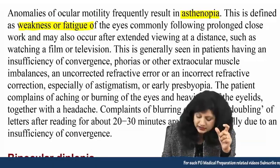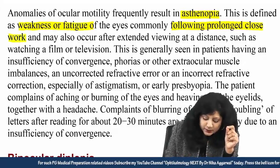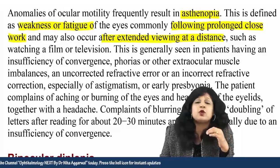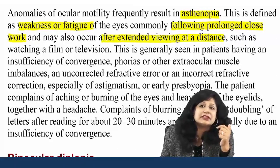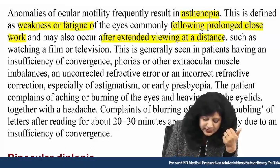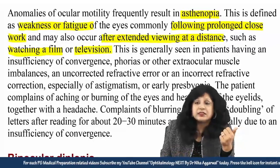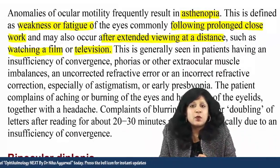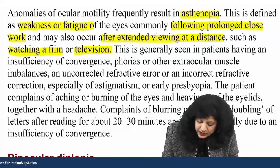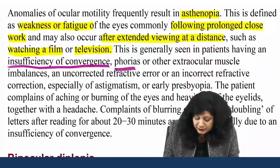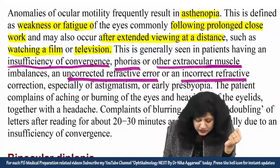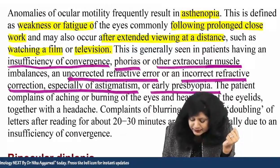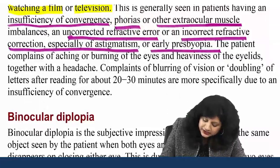This weakness or fatigue due to prolonged close work is the often-cited cause associated with asthenopia. But you will be amazed to see that even when doing prolonged distance work — say watching a film or television — the person also has asthenopia. This occurs due to insufficiency of convergence, phorias (latent squint), or other extraocular muscle imbalances. We can also have uncorrected refractive errors, incorrect refractive correction especially of astigmatism, or early presbyopia — all of which are more or less causes of the latent squint.